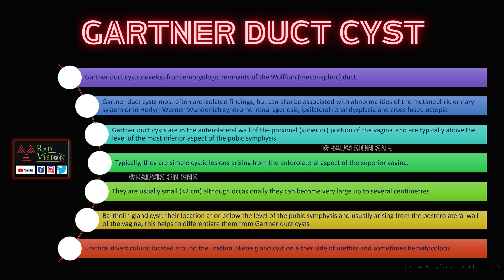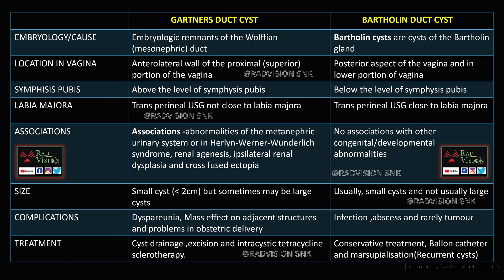Common differentials can be Bartholin gland cyst, urethral diverticulum, Skene gland cyst on either side of the urethra, and sometimes hematocolpos. We will now differentiate Gartner duct cyst from Bartholin duct cyst. Gartner duct cysts arise from embryonic remnants of the Wolffian or mesonephric duct, whereas Bartholin duct cysts are cysts of the Bartholin gland due to obstruction by stone or infective process.